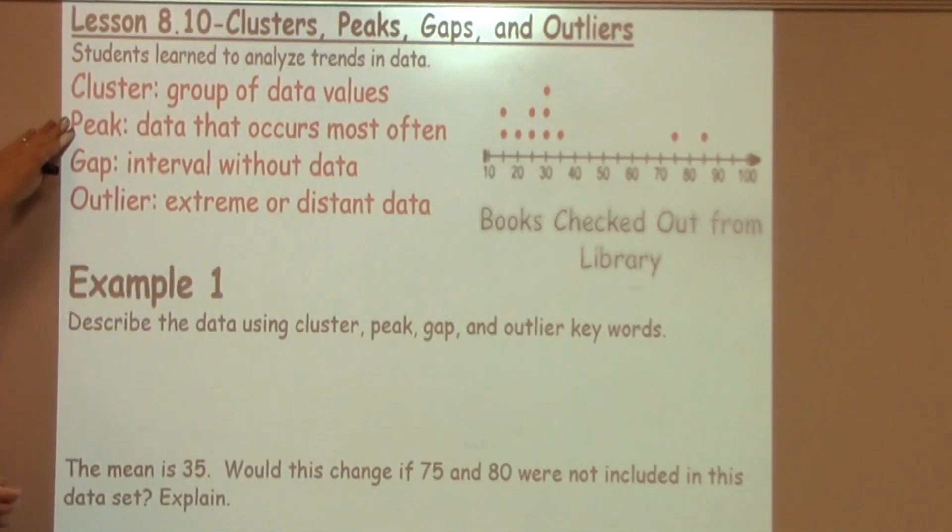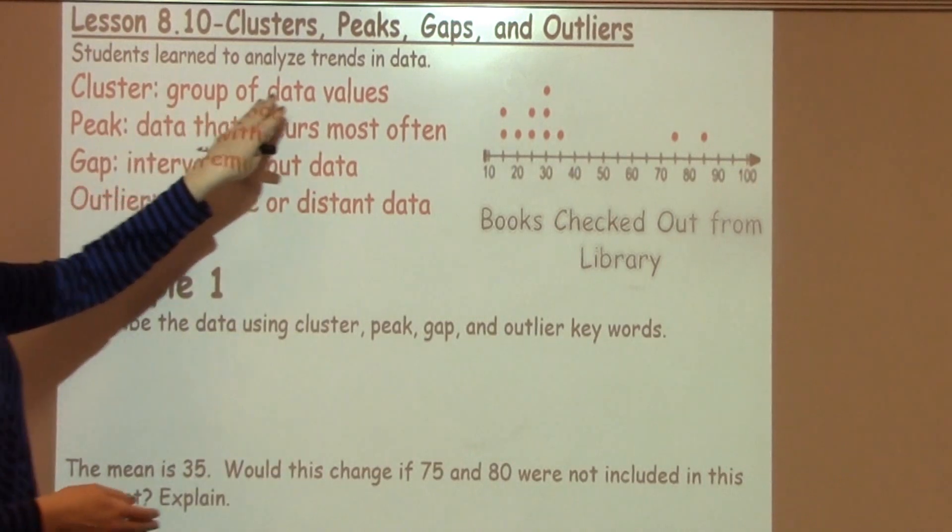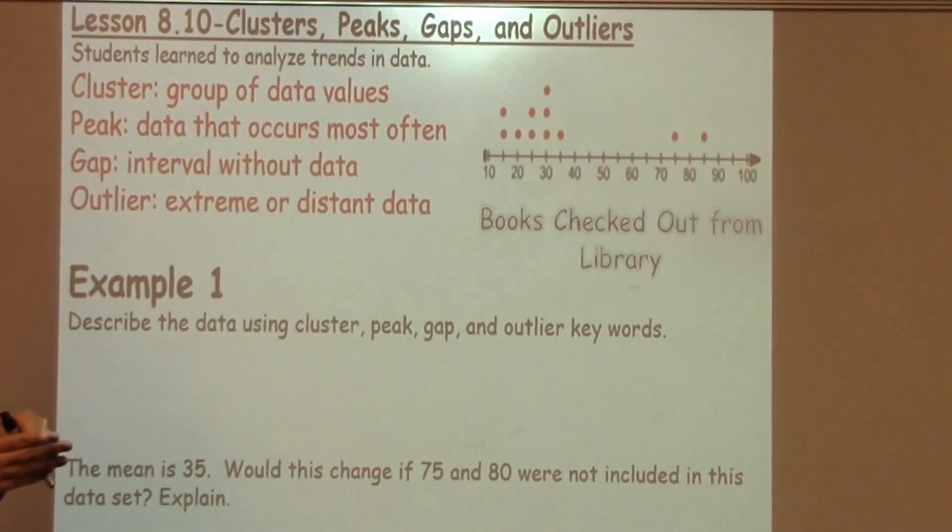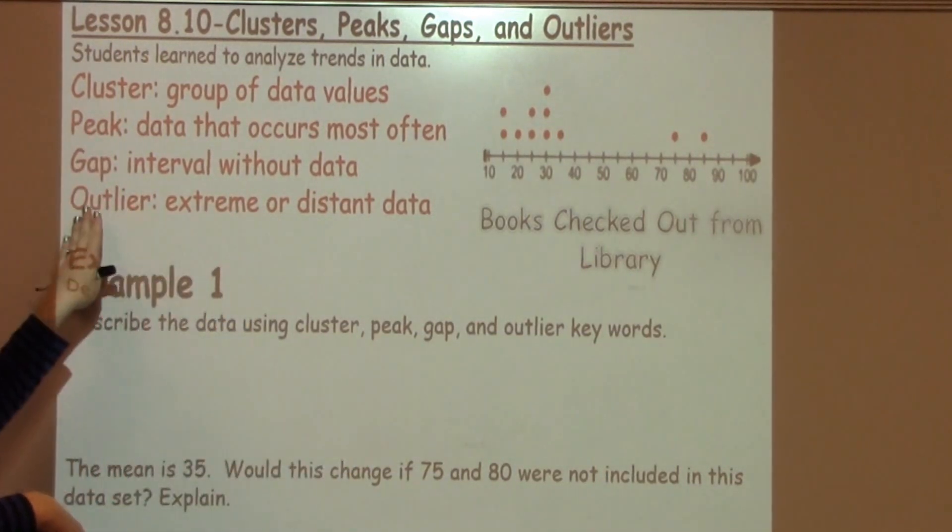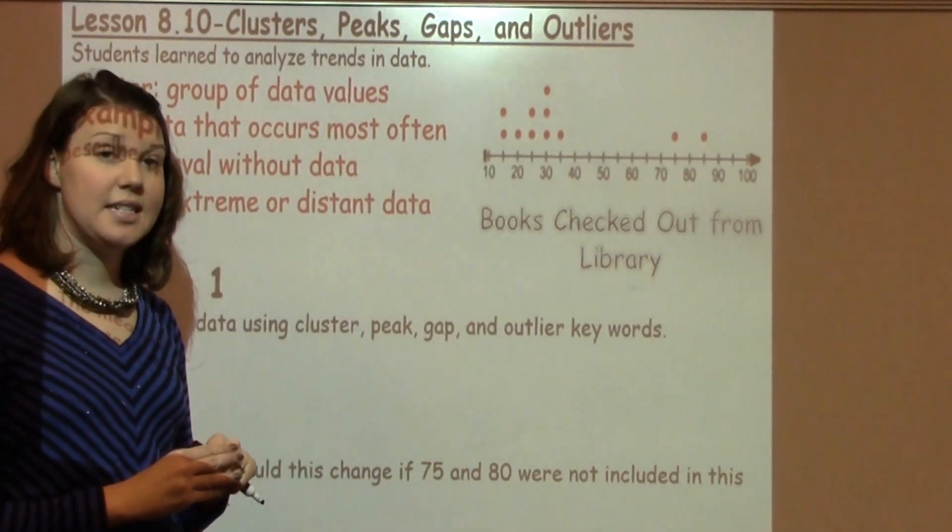An example of these things are listed right here. A cluster is a group of data values. A peak is the data that occurs most often. Gap is an interval without data. And our last one is outlier, which is extreme or distant data.